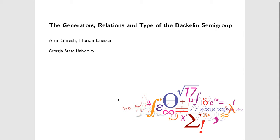I'll mute myself and if anyone has any doubt, feel free to interrupt — just unmute yourself, ask questions, then mute yourself. Hello everybody. I'm Arun Suresh from Georgia State University. I'm a first-year master's student here and today my presentation is going to be on the Generators, Relations, and Type of the Backline Semigroup. This was done mostly as part of my undergraduate research, so there's not going to be a lot of heavy machinery, but it's still a very nice result, so without further ado, let's just delve in.